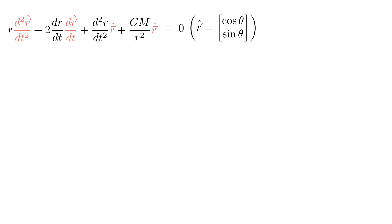First, let's compute the derivative of r hat, which is the derivative of cos theta sin theta. Applying the chain rule, we get d theta dt times minus sin theta cos theta.